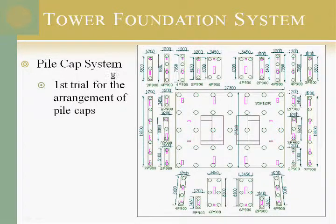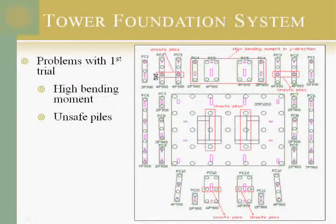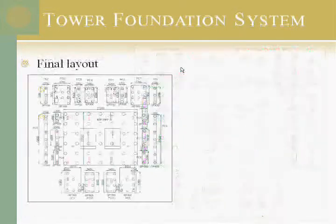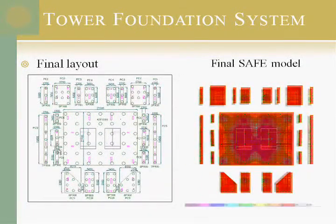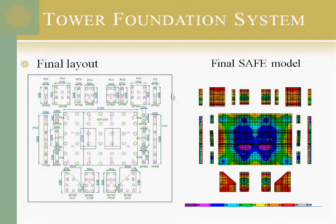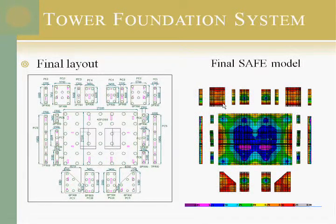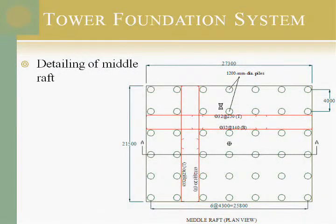So we moved to the pile cap system. We use a middle raft to take the shear walls and major columns, distributing their load to the piles, and for the other columns we provide individual pile caps. There were still some issues — we had to increase the pile cap thickness or increase the number of piles. The final layout shows the number of piles for each column, and there will be a 50 cm raft surrounding these pile caps. The SAFE model confirmed that the reaction coming to each pile is less than the pile capacity, making it an adequate design.